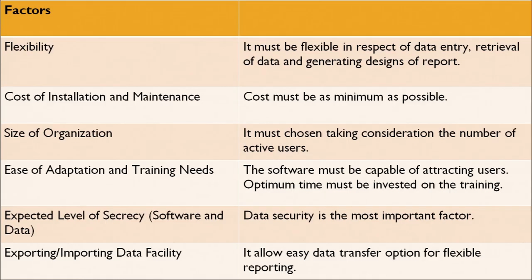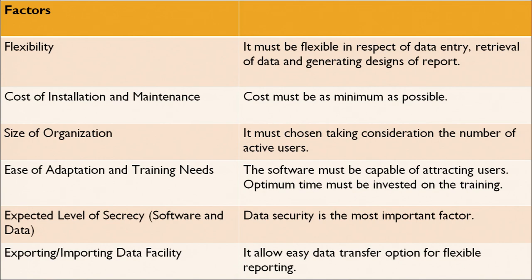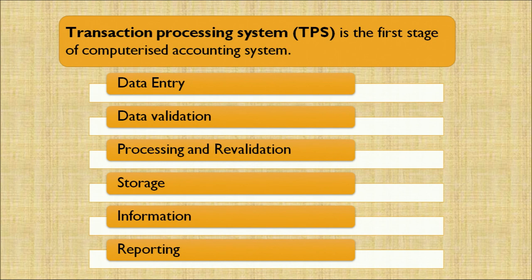What are the factors affecting the decision of which software to use? Number one, it should be flexible; second, cost of installation and maintenance; third, size of the organization; fourth, ease of adoption and training needs; fifth, expected level of secrecy; sixth, exporting and importing data facility. The software should be flexible and customizable as per user needs, installation and maintenance should be less costly, the size of the organization impacts how costly the software is, training needs should be taken care of, secrecy of data must be maintained, and exporting and importing data should be supported. There are various types of accounting entries which include data entry, data validation, processing and revalidation, storage, information and reporting — this is called a transaction processing system.